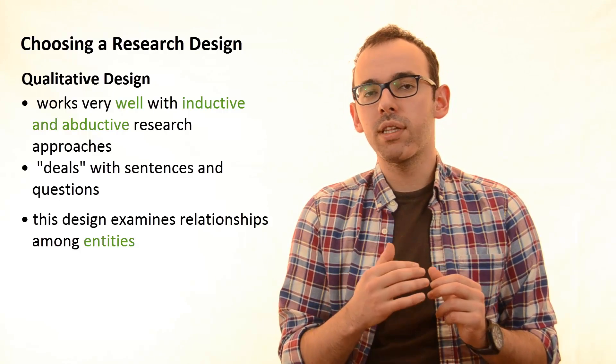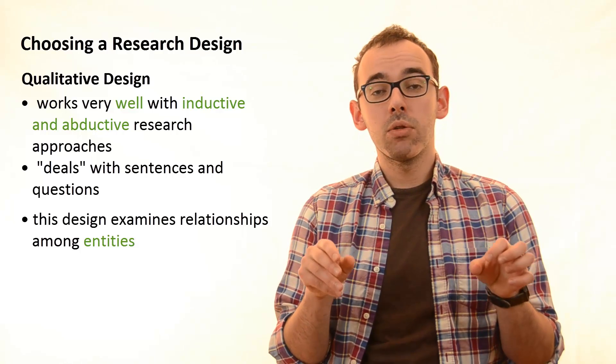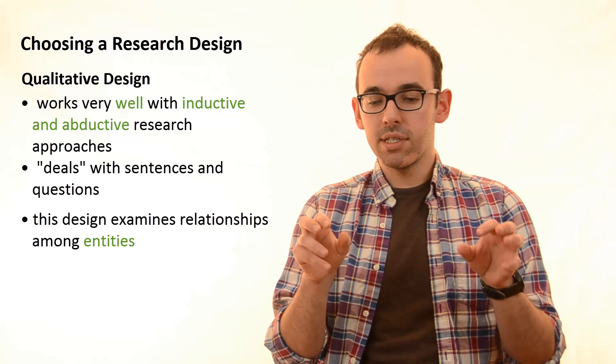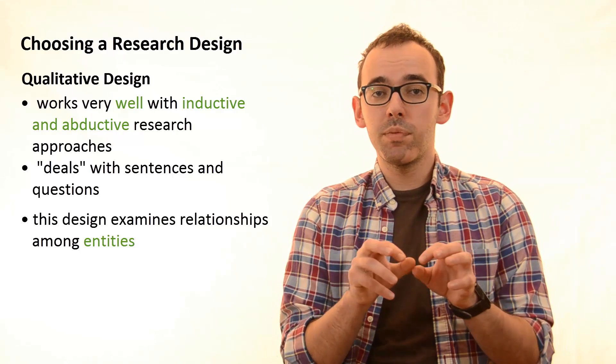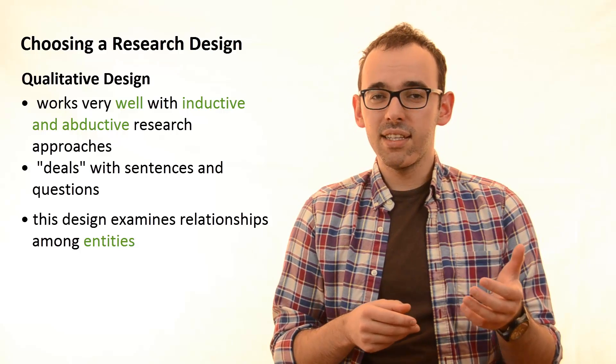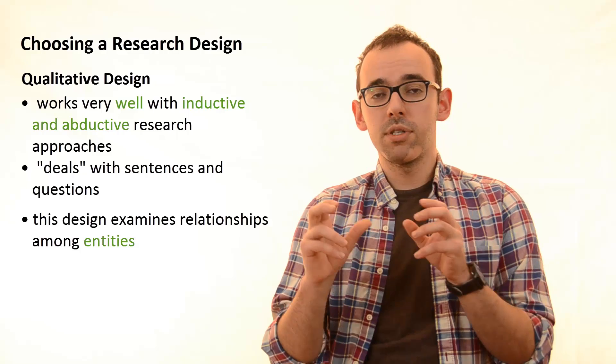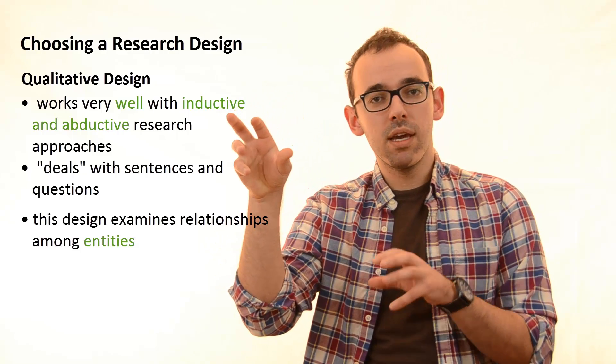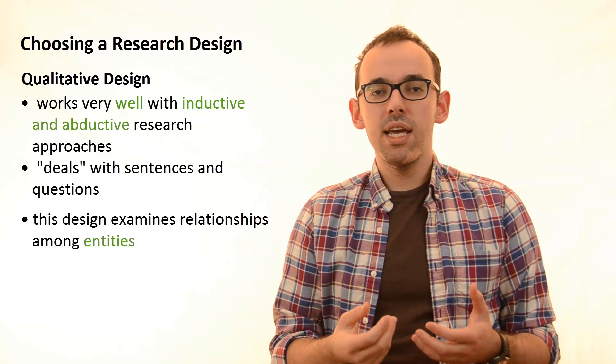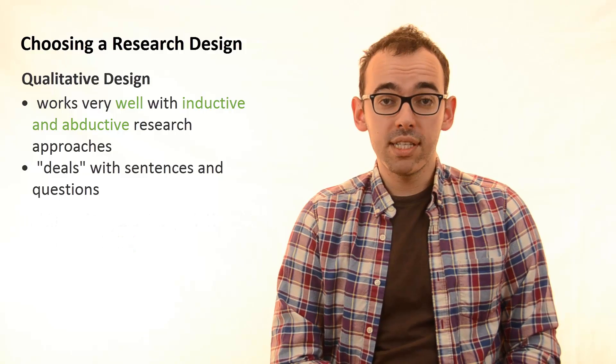So if we are going for a qualitative research design, what can those entities be? Those entities can be for instance people. I can try to examine relationships between people. Or as entities could be understood groups of people, companies, or some actors in the market. Government can be one entity, a company can be another entity. So you see this is the biggest difference between these two research designs.